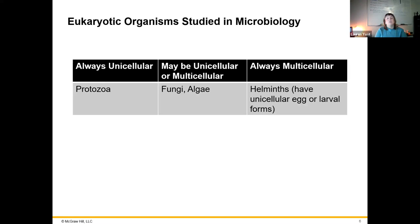Looking at the protozoa — these guys are going to always be unicellular. We have fungi and algae, which can be unicellular or multicellular. We think about mushrooms being multicellular and yeast being unicellular. Then we have the helminths, like tapeworms, and these are always multicellular.